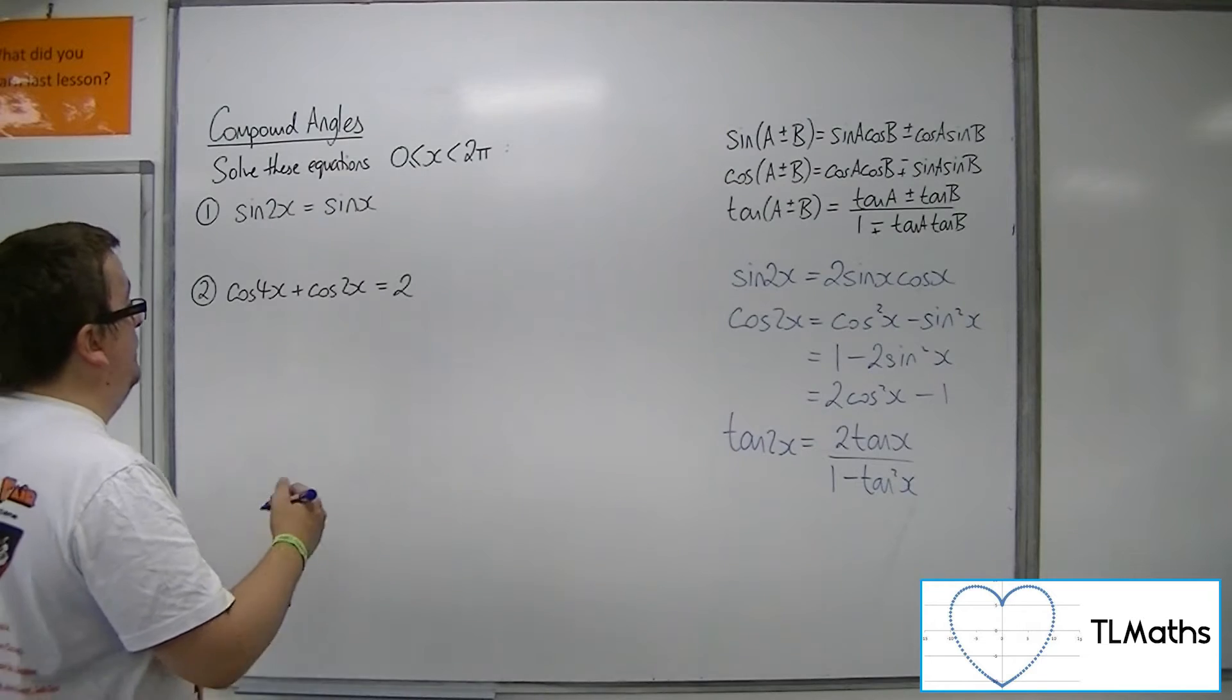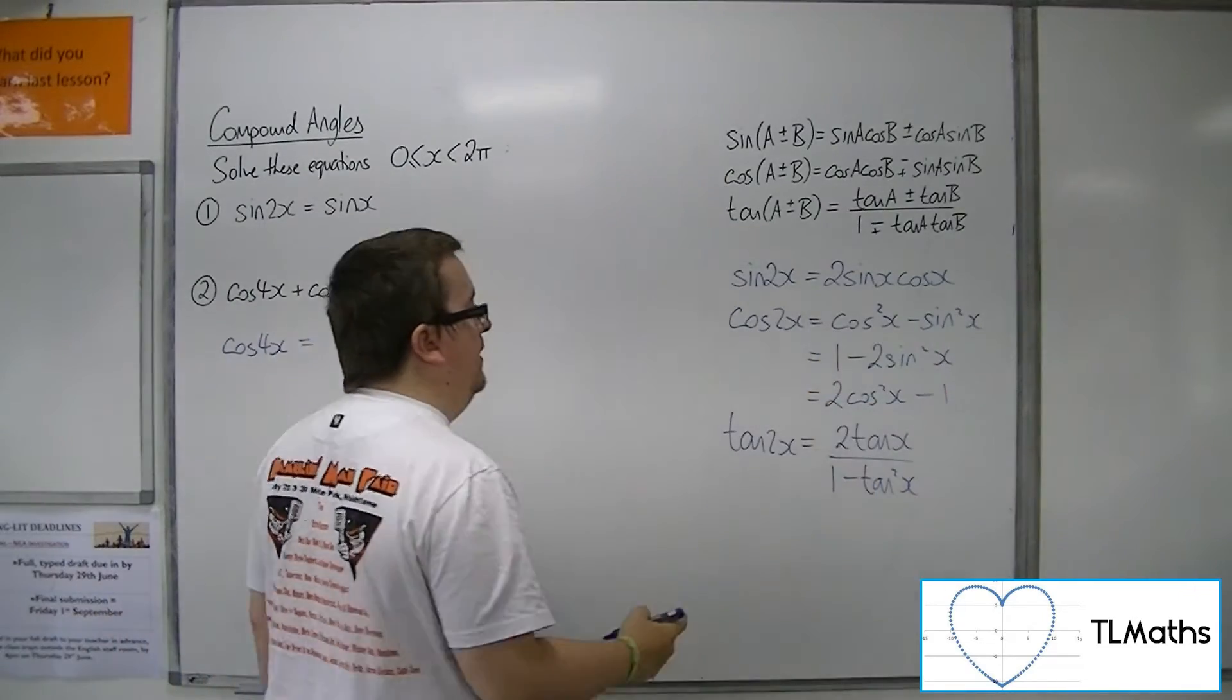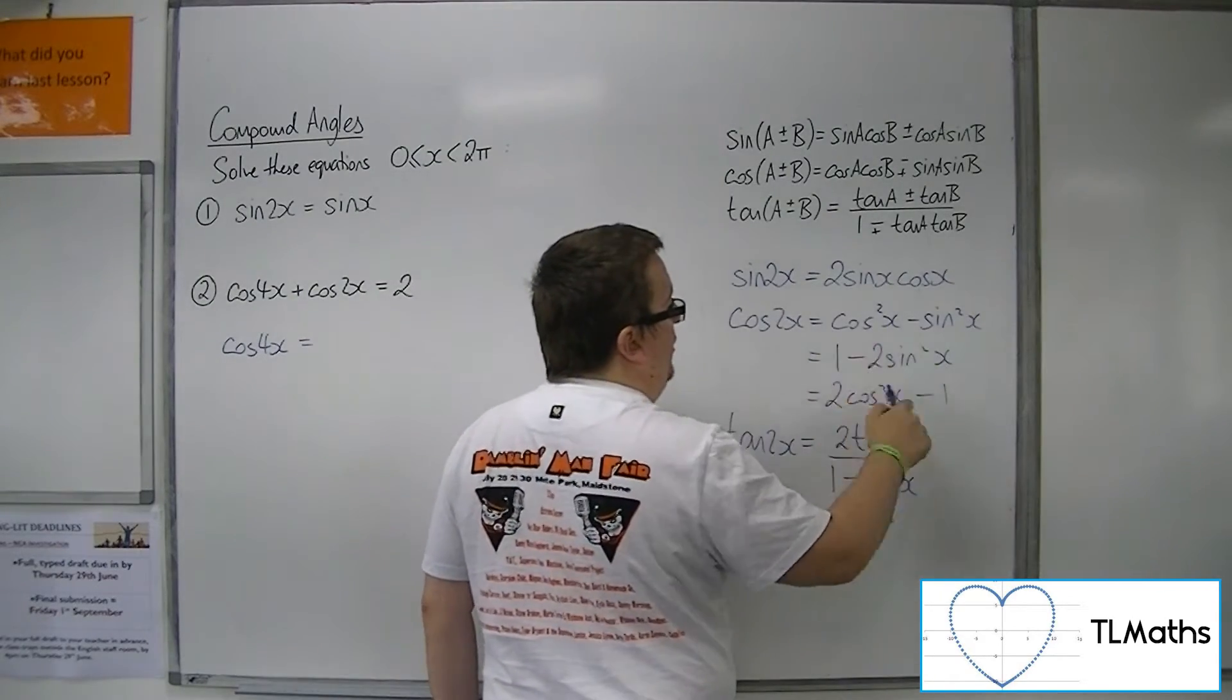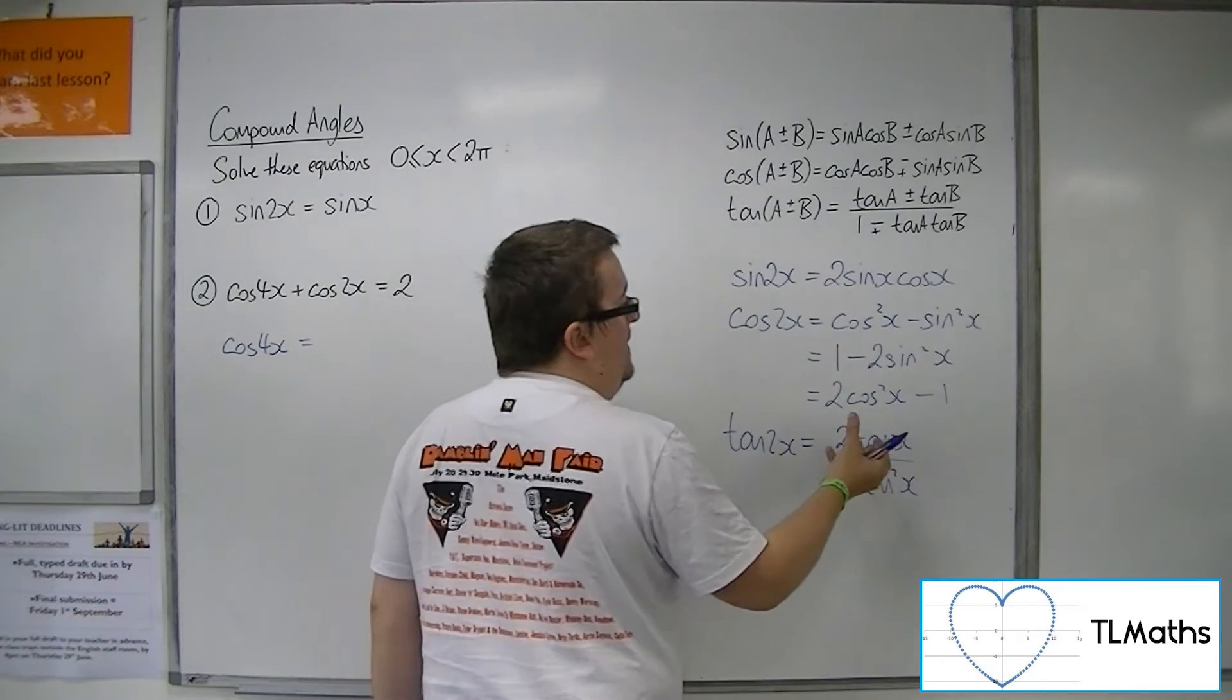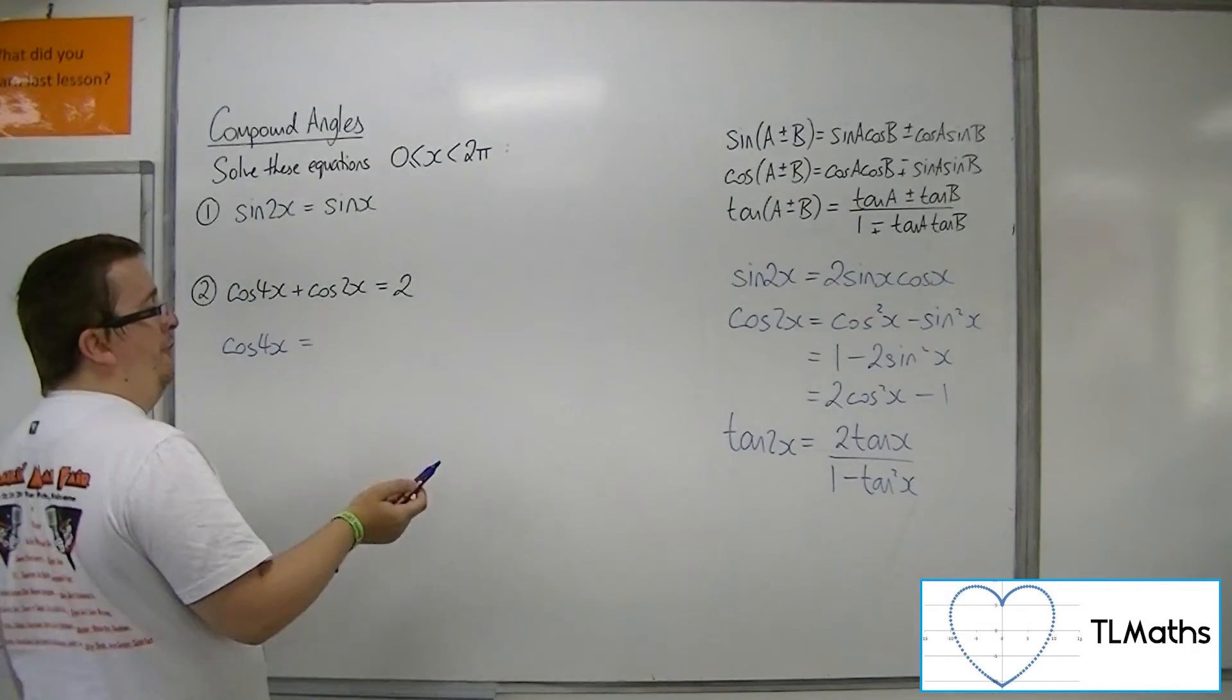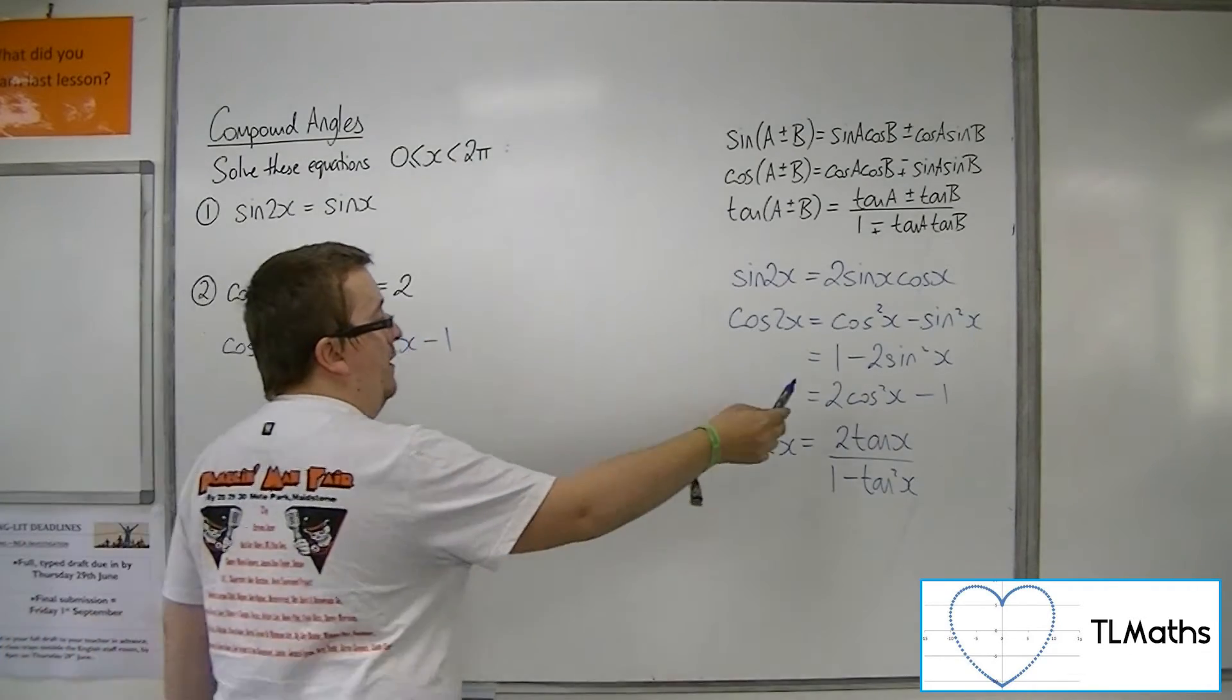So cos of 4x, because cos of 2x is each of these, then cos of 4x is the same as this, but with each of the x's as 2x. Cos of 2 lots of 2x is the cos of 4x. So you could replace each of these x's with 2x, and you get equivalent formulas. So cos of 4x is the same as 2 cos squared 2x minus 1, for example.